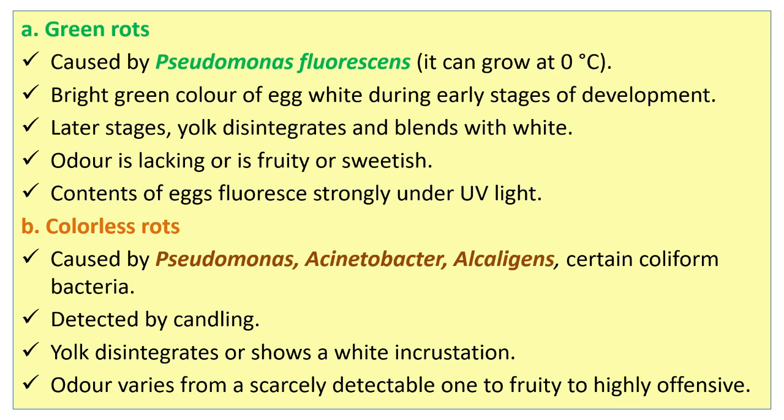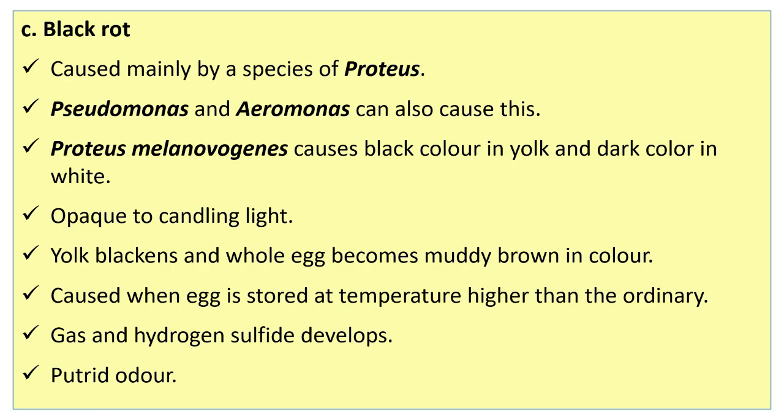Colorless rots in egg are caused by Pseudomonas, Achromobacter, collagen, and certain coliform bacteria, detected by candling. Yolk disintegrates or shows a white incrustation and odor varies from a scarcely detectable one to fruity to highly offensive.